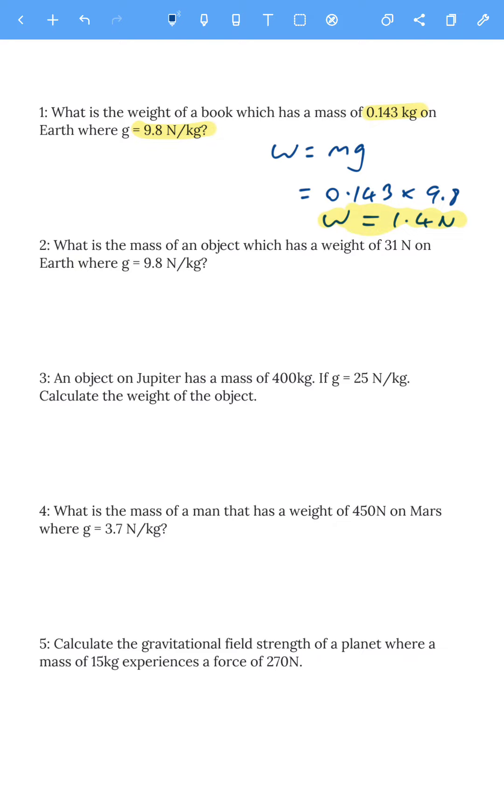Next one. What is the mass of an object which has a weight of 31 newtons on Earth? Weight is mass times gravitational field strength, and we want mass, so we need to get rid of times g by dividing by g on the other side. Weight divided by gravitational field strength gives us mass. That's 31 newtons divided by 9.8, which gives us 3.16 or 3.2 kilograms.